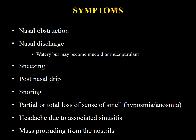Patients may present with nasal obstruction, which may be unilateral or bilateral, complete or incomplete depending on the size and extent of the polyp. There may be nasal discharge, which may be watery, mucoid, or mucopurulent. Sneezing may have reduced after polyp development but there will be a history of sneezing in many patients. Other symptoms include post-nasal drip and snoring.